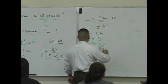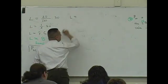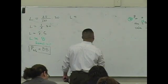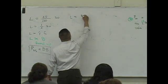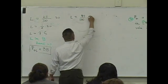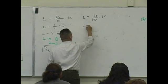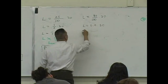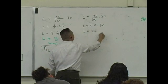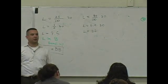All right, here we go. What's the next one? P90. 90 over 100 times what? 30. L is 0.9 of 30. L is 27. Is that true? Okay. What do you do now?